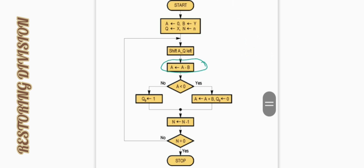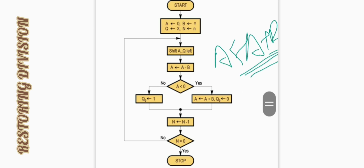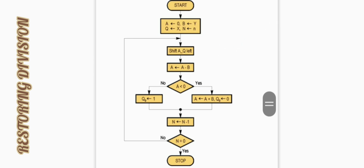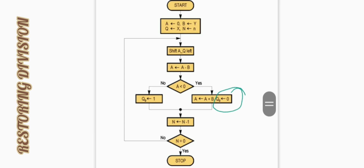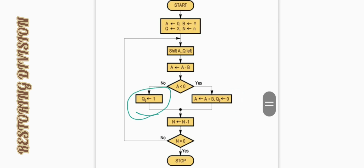After performing A minus B, we check the result. If A is less than 0, then Q0 (Q naught) is set to 0, and we perform the restoring step: A becomes A plus B. This is why the method is called the restoring division method — we restore the value of A by adding B back. If A is greater than or equal to 0, then Q naught is set to 1.